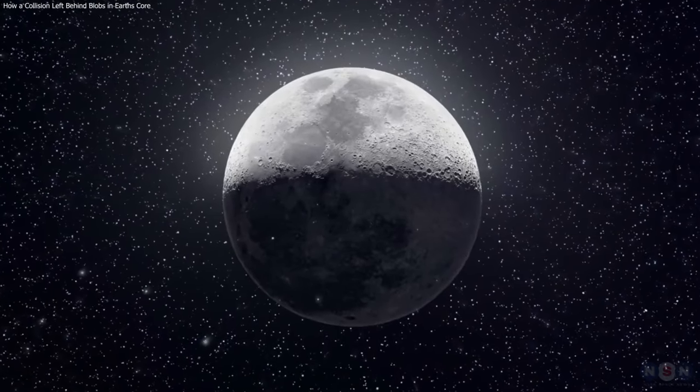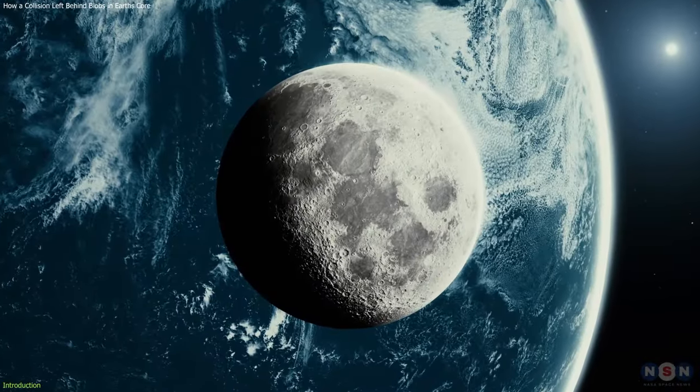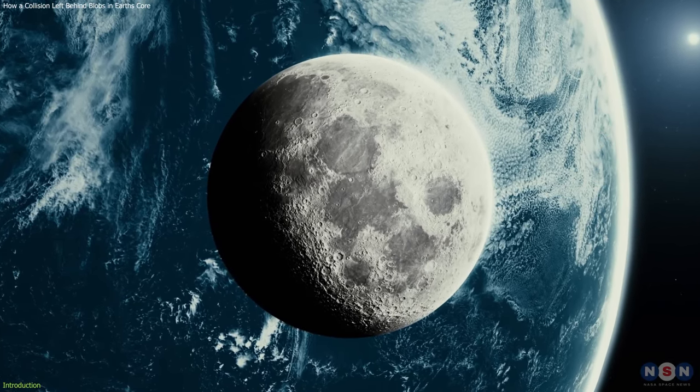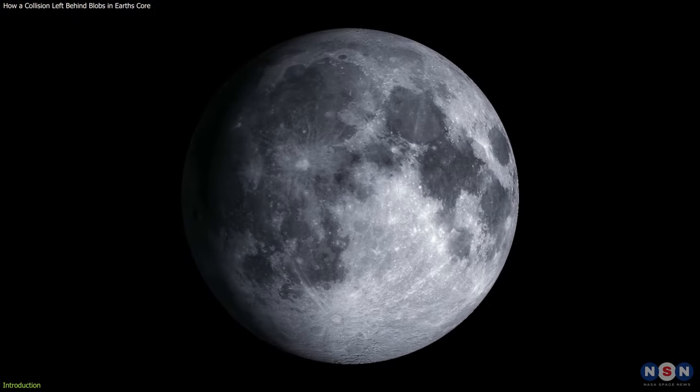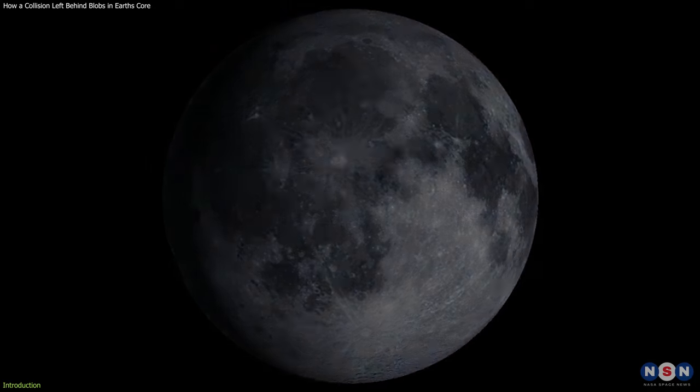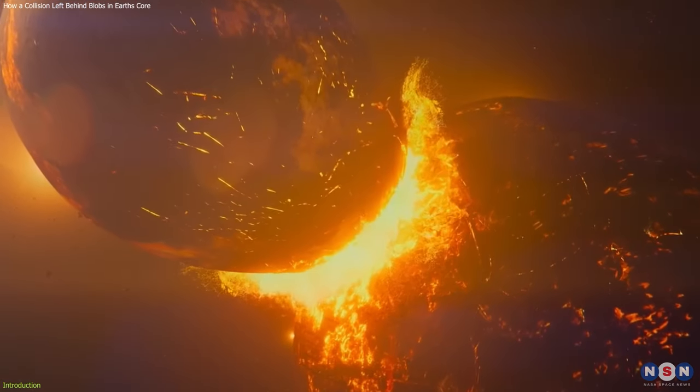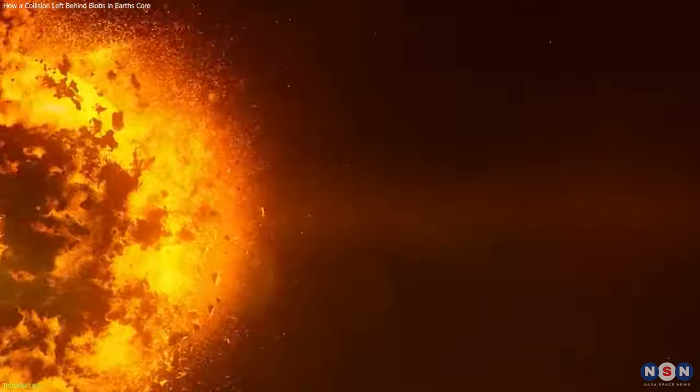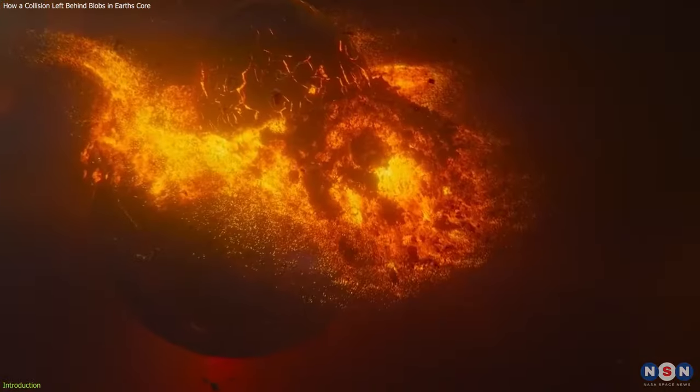Have you ever wondered how the Moon was formed? How did our planet get such a beautiful and faithful companion in the sky? Well, the most widely accepted theory is that the Moon was created by a giant collision between Earth and another planet-sized object about 4.5 billion years ago.